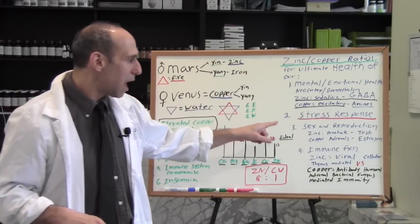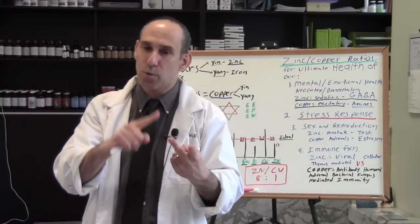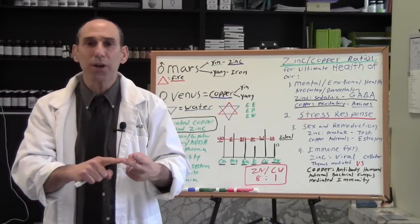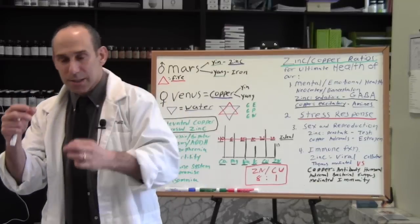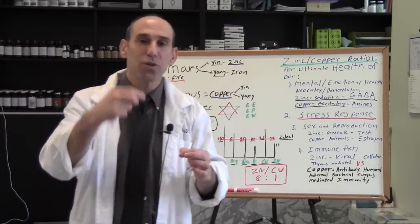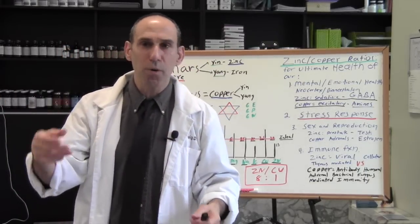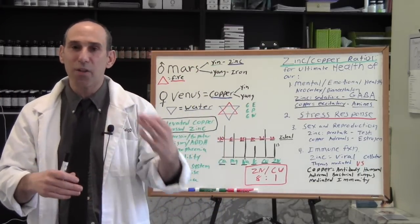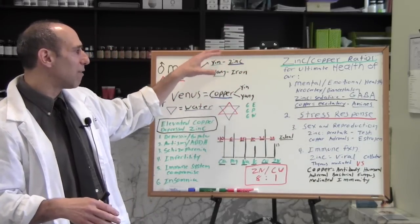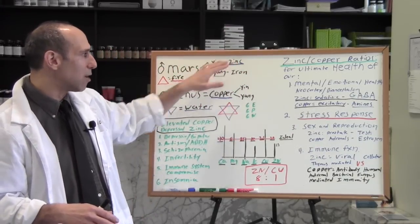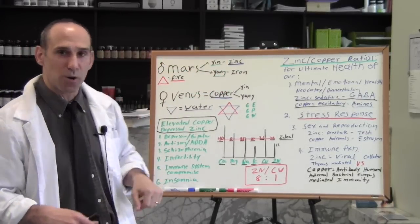We also know that zinc and copper are huge in our understanding of sexuality and reproduction. Like I mentioned earlier, copper is intimately tied to estrogen. Zinc is intimately tied to testosterone. We know that without zinc, we're not making sperm. Without zinc, we're not going to have healthy prostate glands. So we know that zinc has that more of a higher octave Mars-Yin energy, where we know that iron is more of that lower Mars energy.